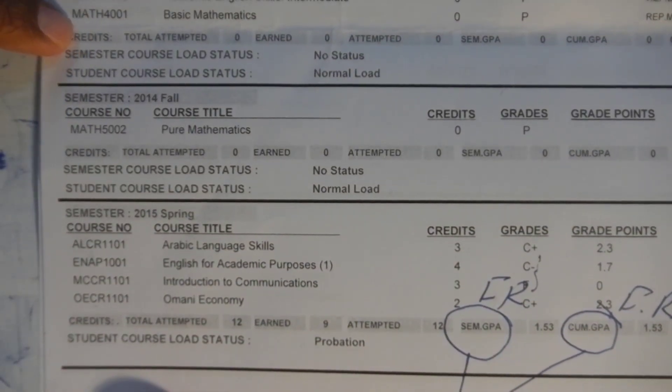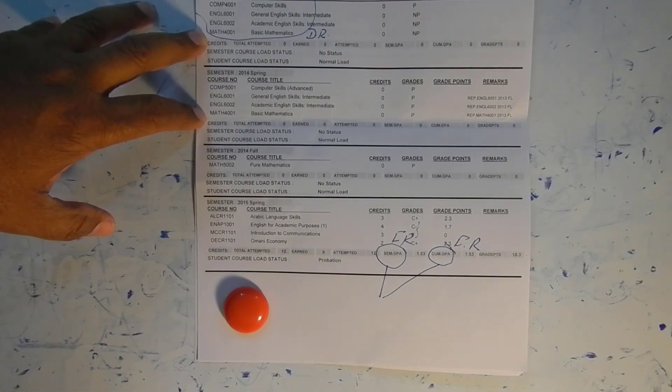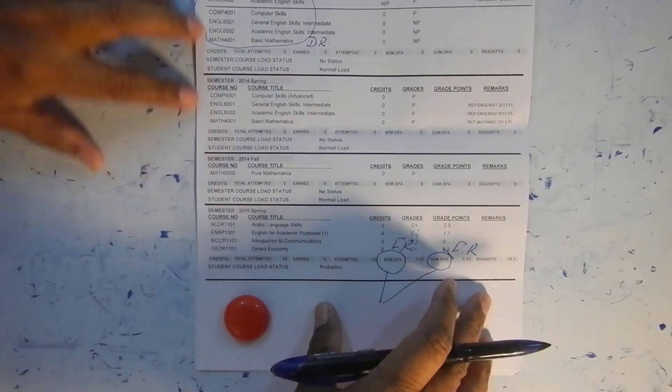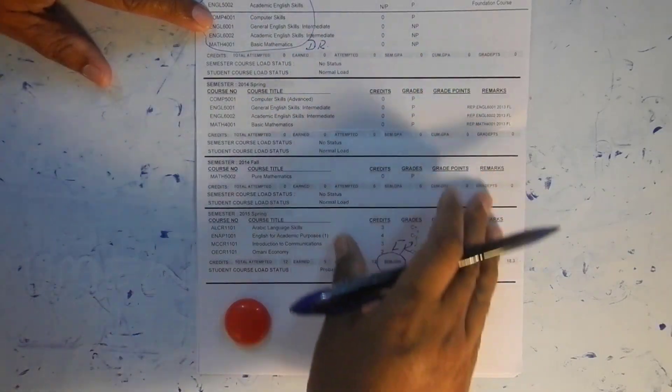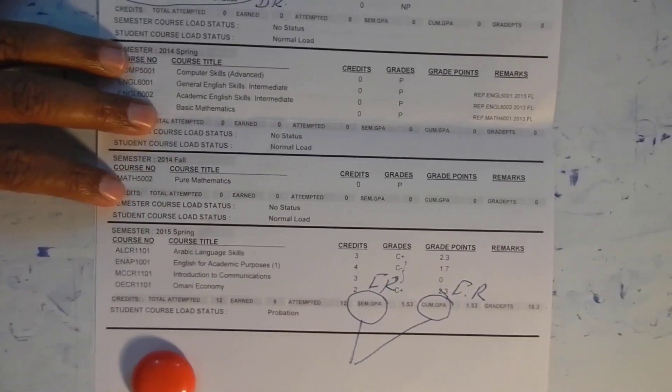Now coming to non-functional requirements: non-functional requirements are requirements that do not define system functionality; rather they define other factors like usability. This transcript is generated in the form of a table so that it is easy for the user to read and understand it. The formatting of information or data in this table will come under which type of requirement? It will come under non-functional requirement — specifically the ease of use or ease of understanding.